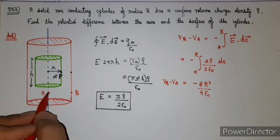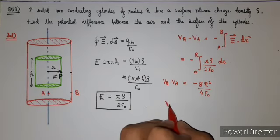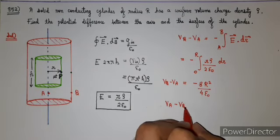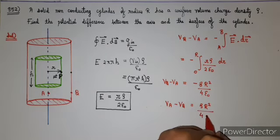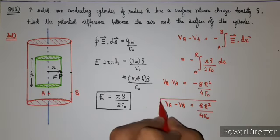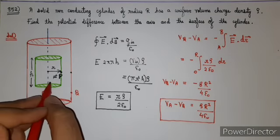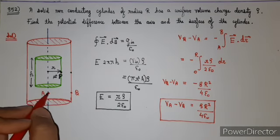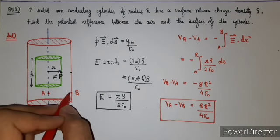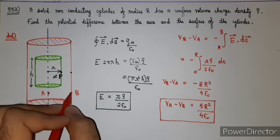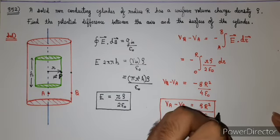Therefore, V_a minus V_b equals rho R squared by 4 epsilon not. We can conclude that if the cylinder is positively charged, since the field is directed radially outward, the axis point A is at a higher potential compared to the surface point B. This is our desired result.